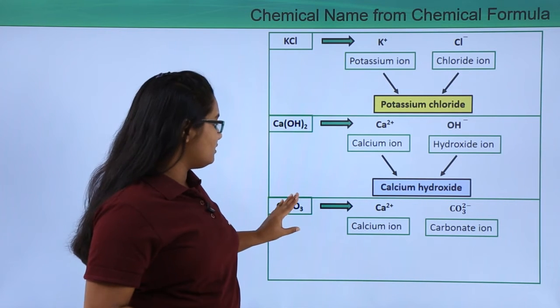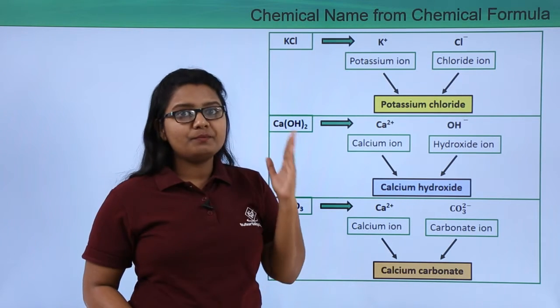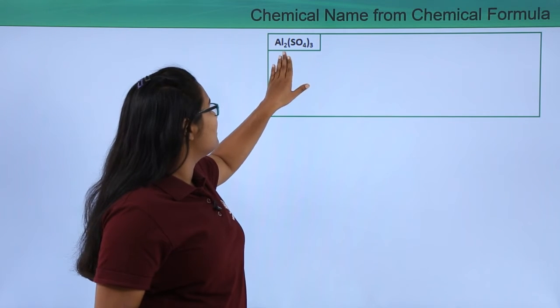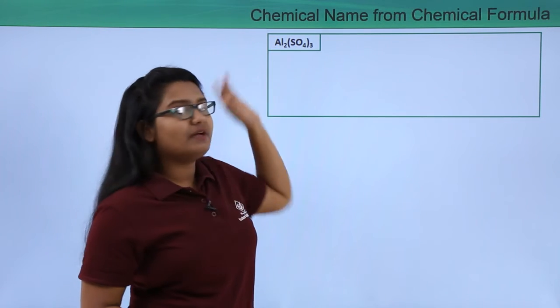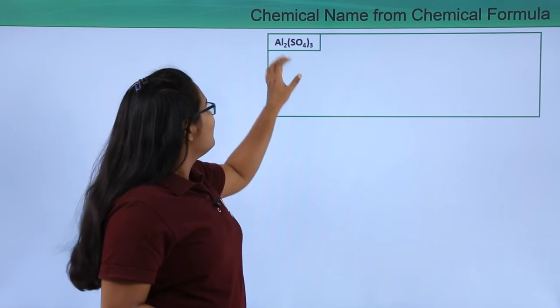Now from these two ions we can figure out the name of this compound as calcium carbonate. Now let's do some more problems like this. Now here I have a compound which is represented as Al2(SO4)3.